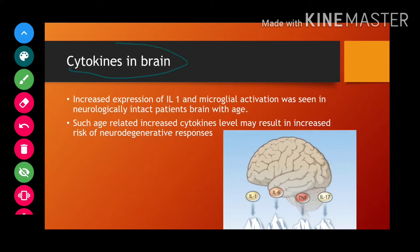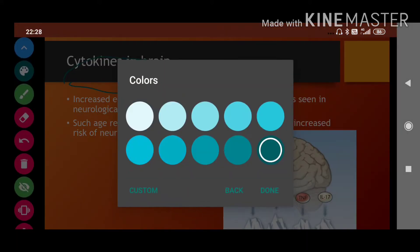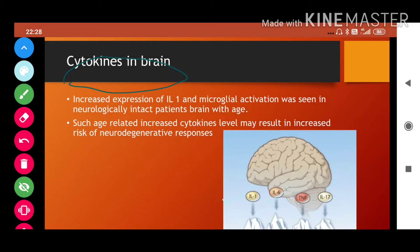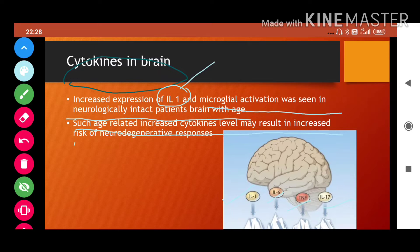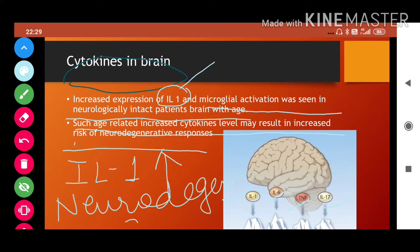Now, talking about cytokines in the brain — cytokines present inside the brain are very important. The important cytokines are IL-1, IL-6, TNF, and interleukin-17, with IL-1 being the most important. Due to microbial activation, we observe that even in neurologically intact patients — people who are completely healthy neurologically — IL-1 expression increases with age. Such age-related increases in cytokine levels result in increased risk of neurodegenerative responses.